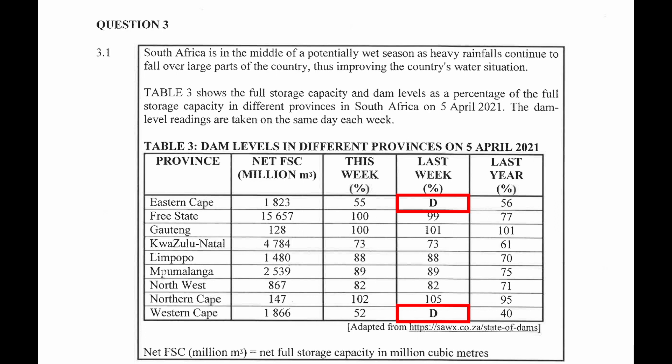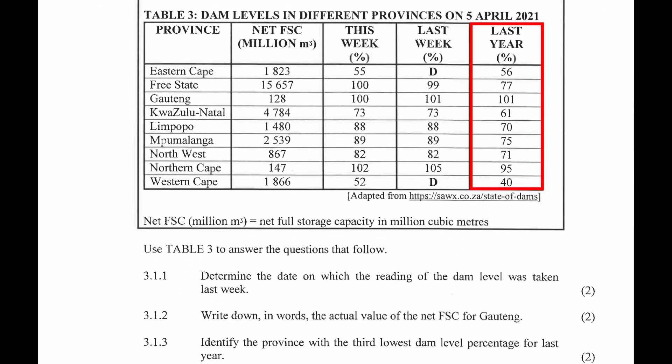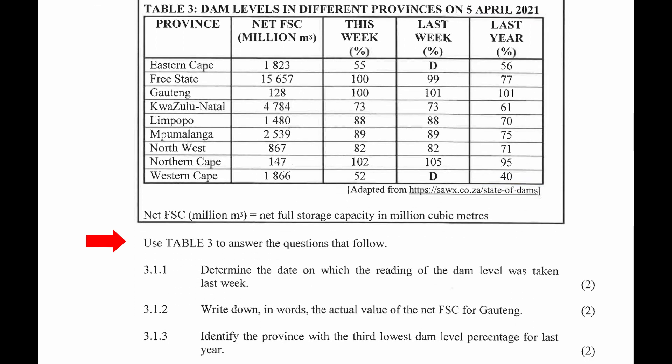In the fourth column we see that we are given two unknown values labeled d. We will probably be asked to determine these values at some point. As a side note, if two unknown values are given the same letter, they will have the same value. Finally, in the fifth column we are given the amount of water as a percentage of the net full storage capacity for each province for last year.